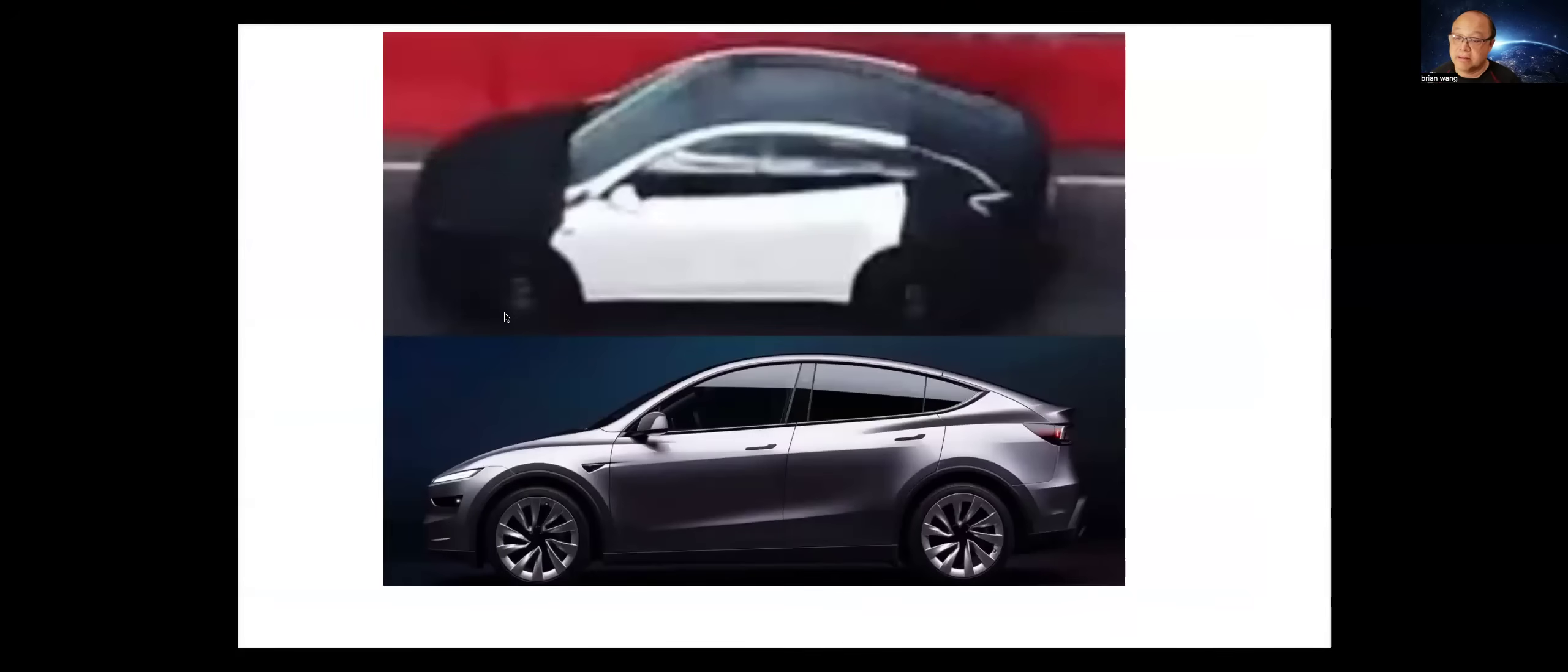Put them into an AI and the AI determines that the new car is 4.3 tire lengths long versus 4.6 tire lengths long for the previous Model Y. So this is a compact version. It also says that the height is more sharp and the window curves more sharply. So we can look at those side by side and the new car is shorter.